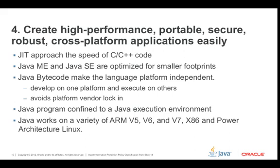Java ME and Java SE are optimized for a smaller footprint, running very robustly in constrained environments. For portability, the Java bytecode makes the language extremely platform-independent — we can develop in an emulated environment and deploy to one platform or another, avoiding platform lock-in. So switching from an ARM processor to x86 or a Power architecture is possible. Java programs are also confined to their Java execution environment — a sandbox — meaning the operating system is safe and execution is limited to what's needed.